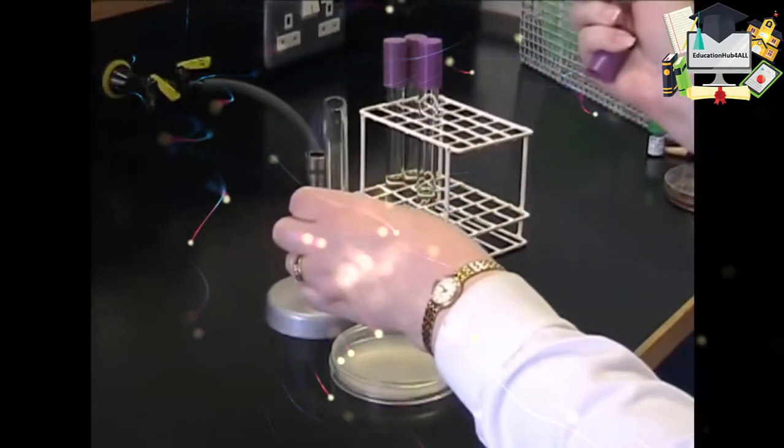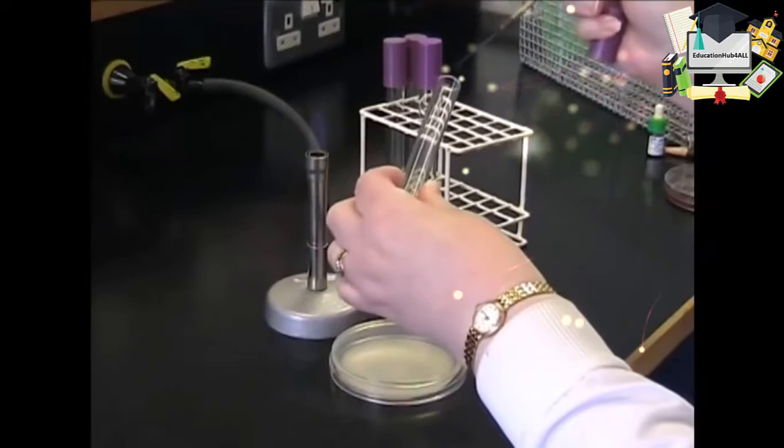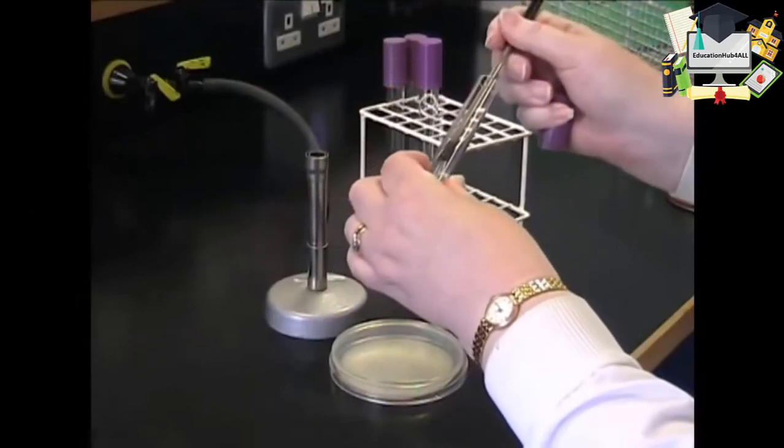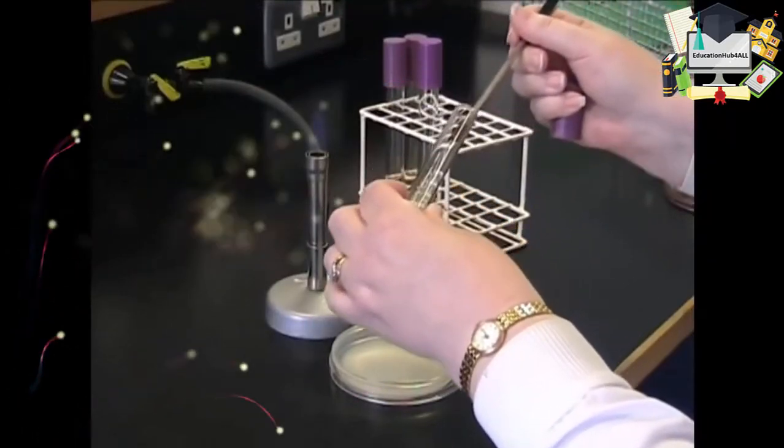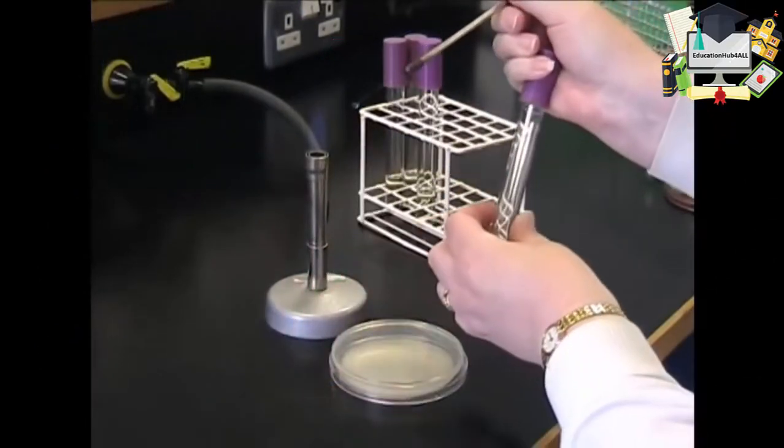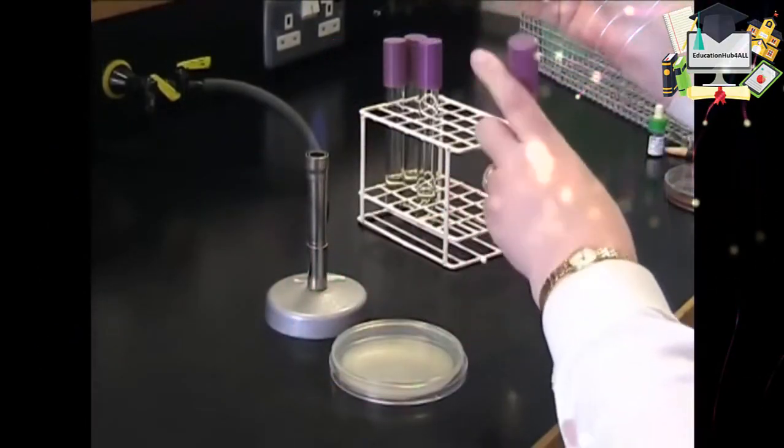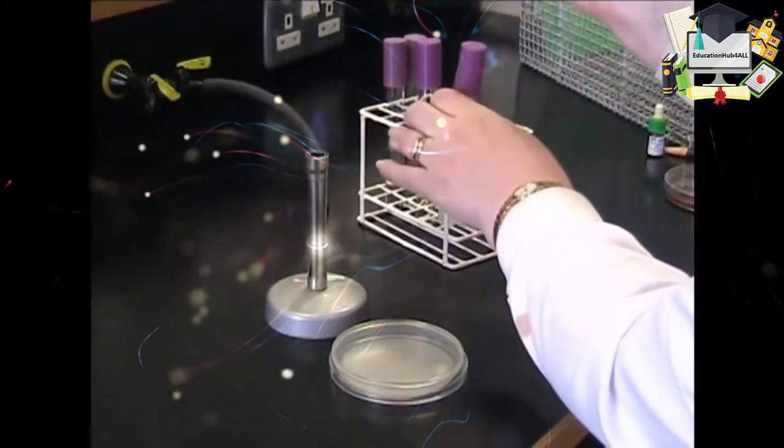Make sure you flame the neck of the test tube through the Bunsen burner using your cooled and flamed loop. Remove a drop full or loop full of bacteria. Place the lid.